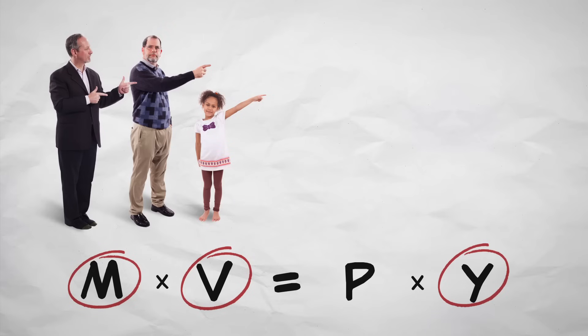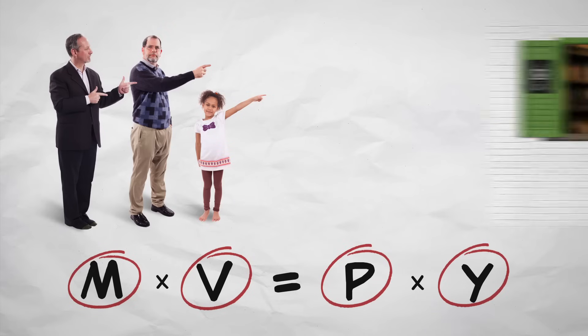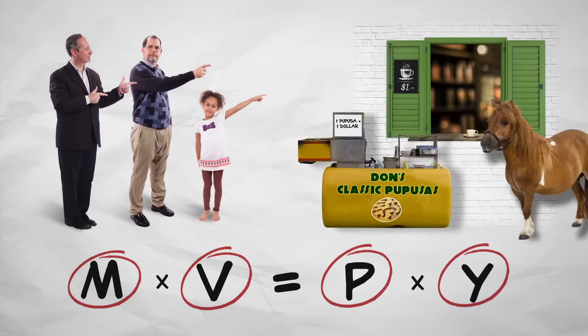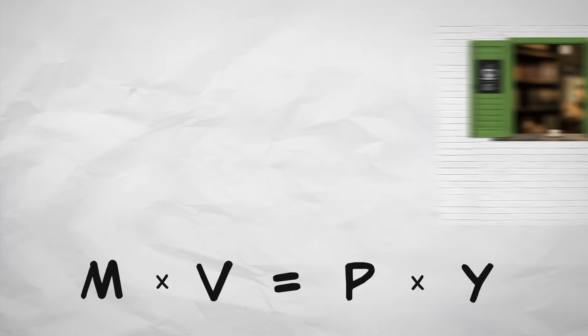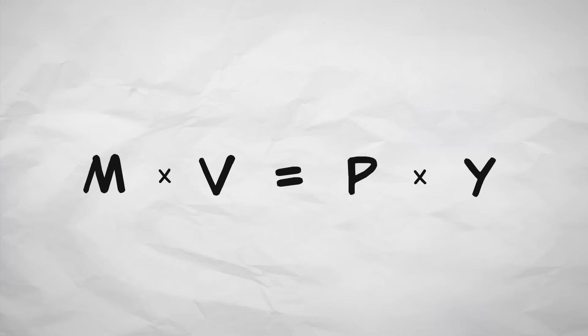The stuff we sell times the prices we charge covers the actions of sellers. Given that everything that is sold is, by definition, bought by someone, this equation is true by definition.